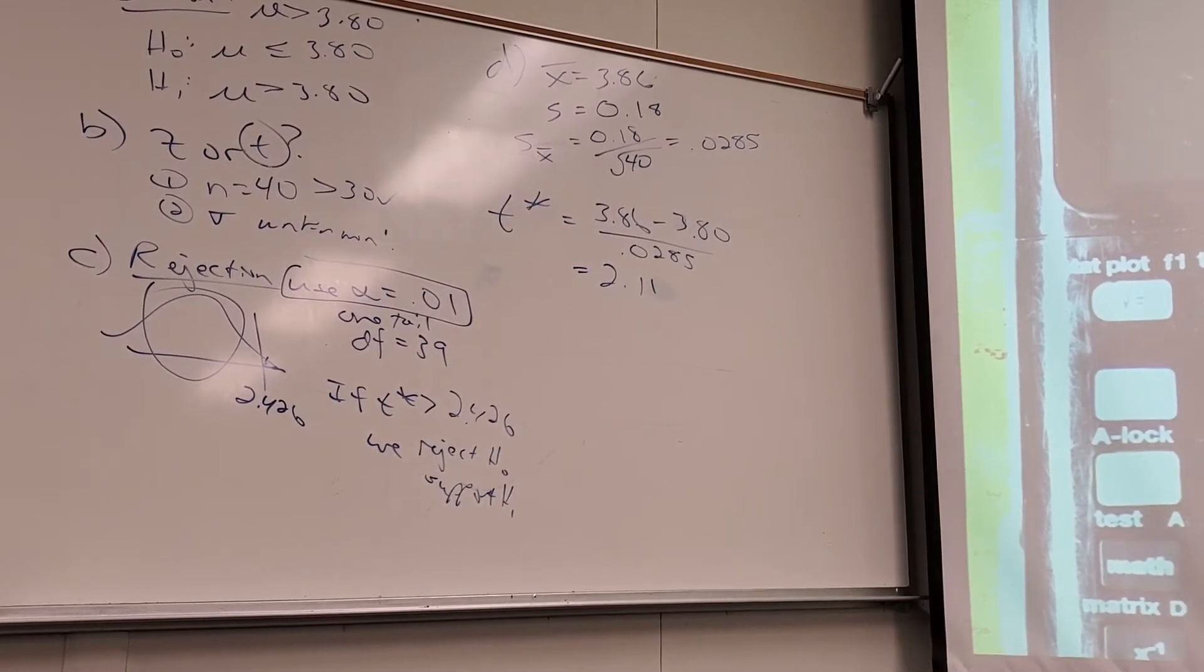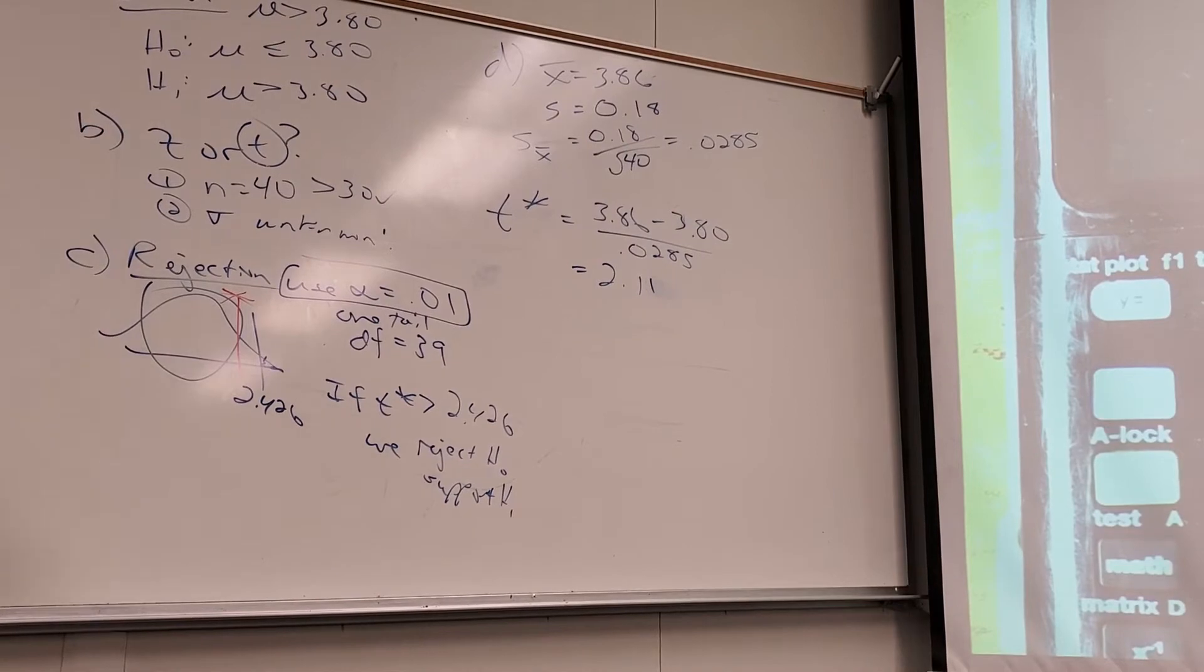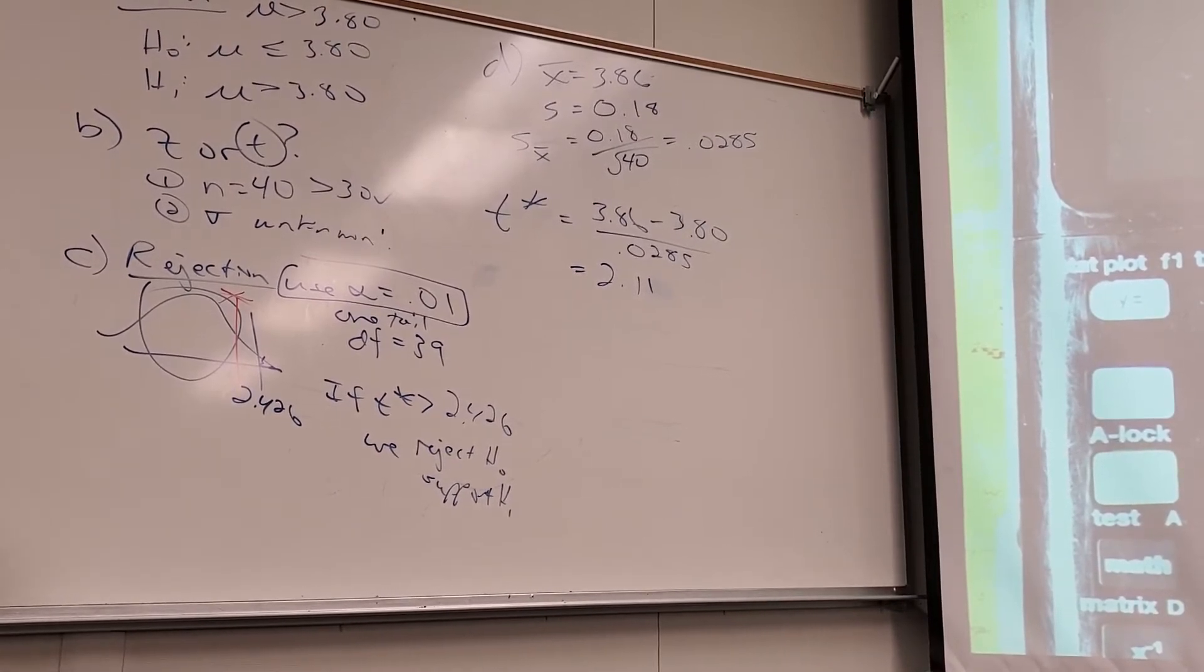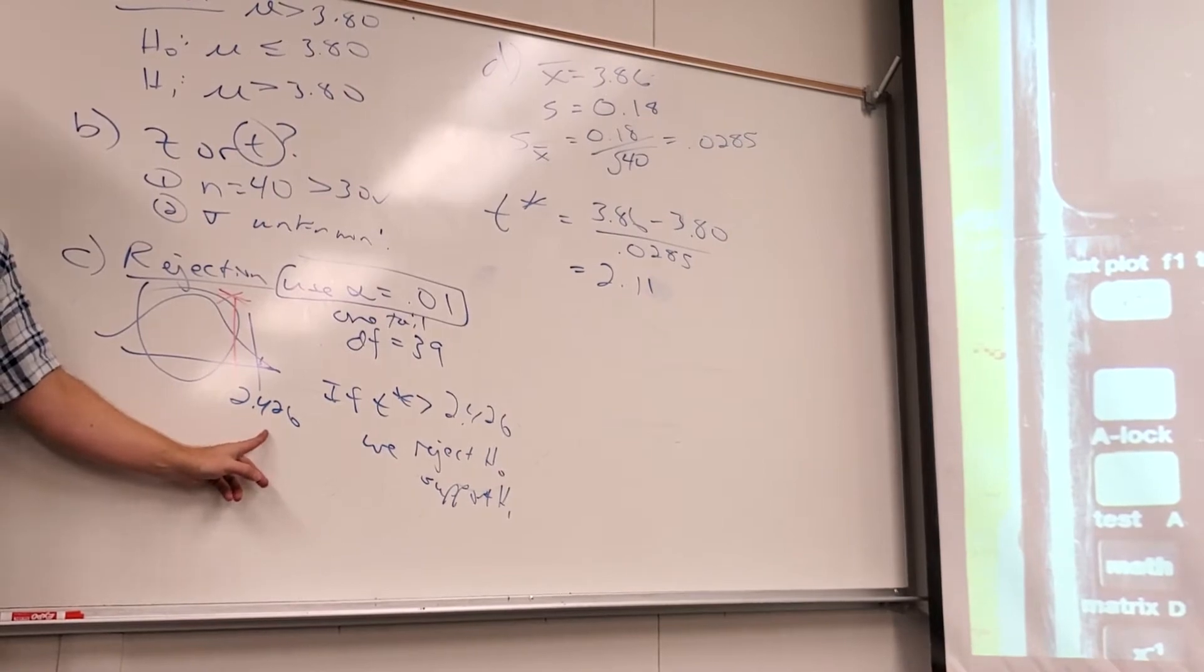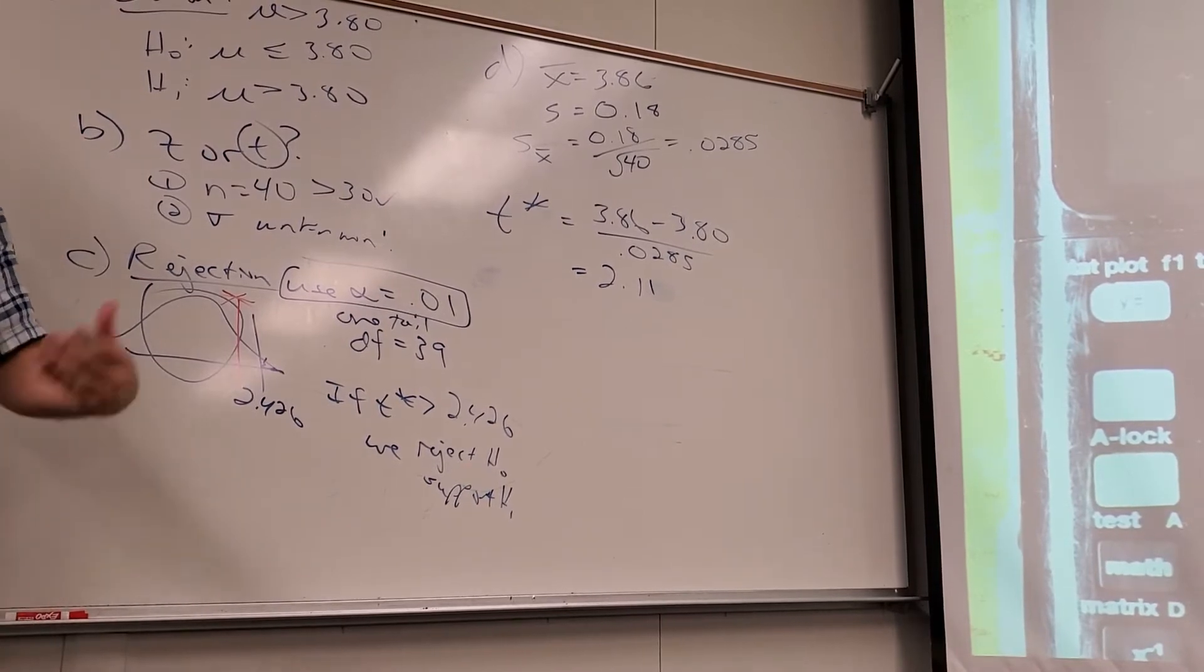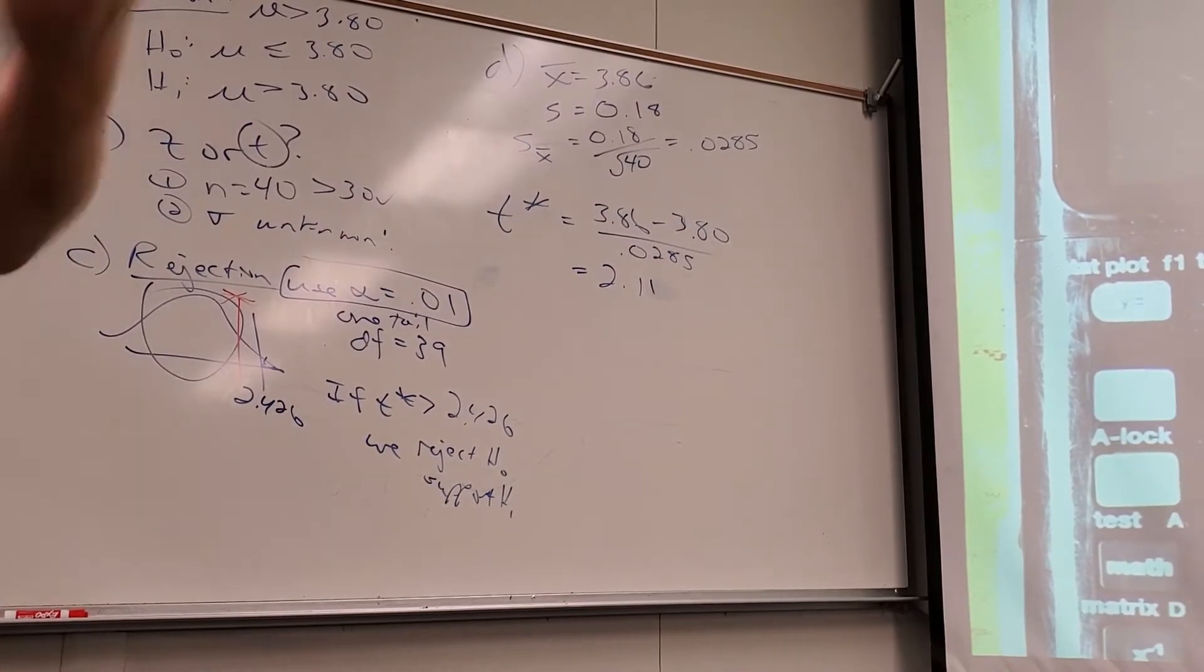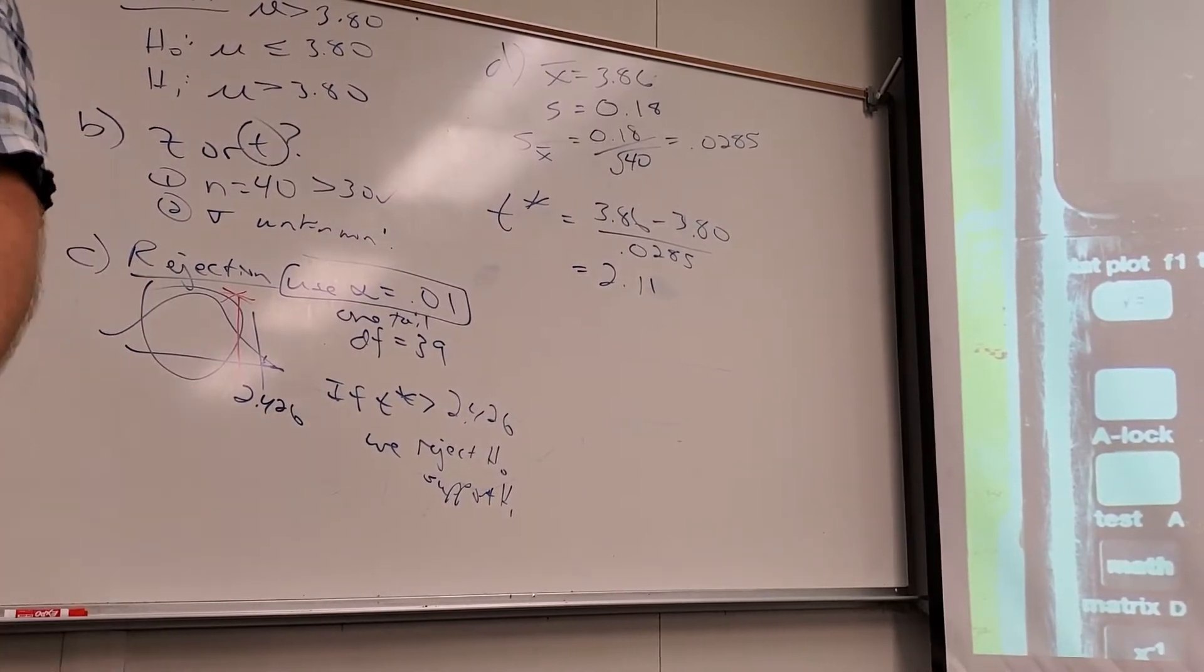So what does that tell us when we look at our rejection region? We fail to reject the null. The only thing I want you to realize - is 2.11 a decent distance in standard deviations? Yes, it is a decent distance. But was it in this specific case far enough? No. So if I really believe this claim, what am I going to go do? I'm going to go take another sample, maybe a little bit bigger sample. That's why we never accept the null, because I can't prove that. It's always just not disproven yet, just like all science.